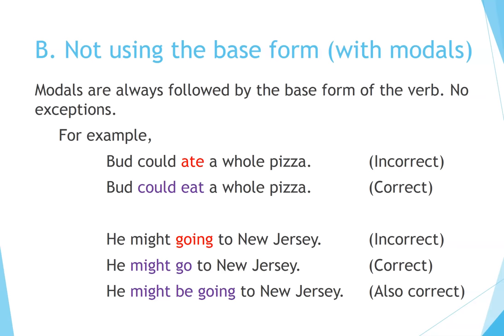B. Not using the base form with modals. Modals are always followed by the base form of the verb — no exceptions. For example: 'Bud could ate a whole pizza' — incorrect. 'Bud could eat a whole pizza' — correct. 'He might going to New Jersey' — incorrect. 'He might go to New Jersey' — correct. 'He might be going to New Jersey' — also correct.